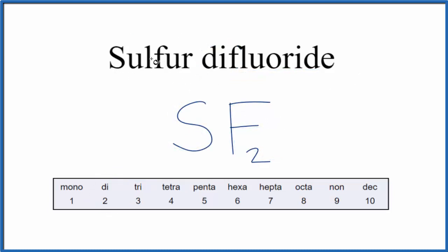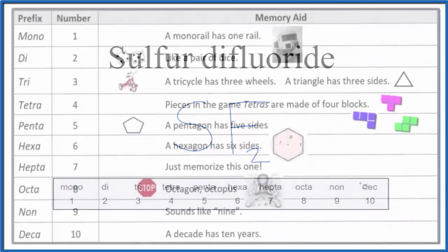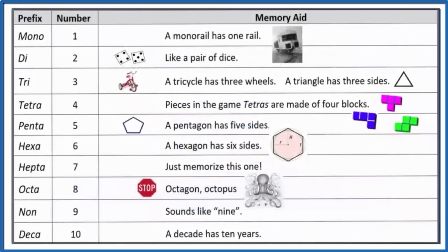Note that for sulfur it's all by itself, but for the first element in a molecular formula, we don't write mono for the first one. So that makes SF₂ the formula for sulfur difluoride. If you need help remembering these prefixes, this table should help you do that. This is Dr. B with the formula for sulfur difluoride, SF₂.